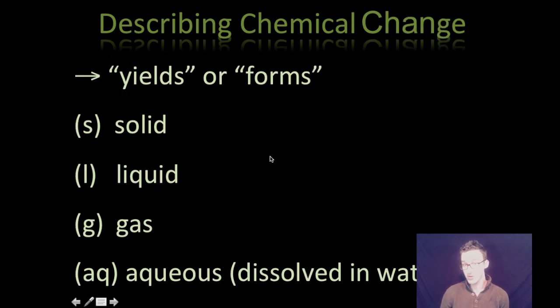And some of those symbols that are really going to help you out and you need to be familiar with is anytime you see that arrow, we're talking yields or forms or produces or makes, something to let us know we're going from reactants to the products. S in parentheses for solid, L for liquid, G for gas.